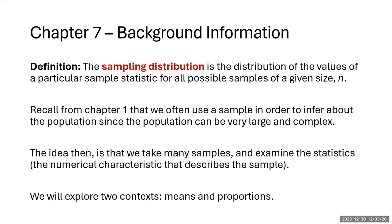In this chapter we explore sampling from two contexts: means and proportions. Means are for quantitative data, and proportions are for qualitative data — vocabulary from chapters 1 and 2. This theme of means and proportions will come back when we look at confidence intervals and hypothesis tests. What we're learning here builds on last week's material and will be necessary when we get to hypothesis testing, so you'll see this chapter 7 material come back again.